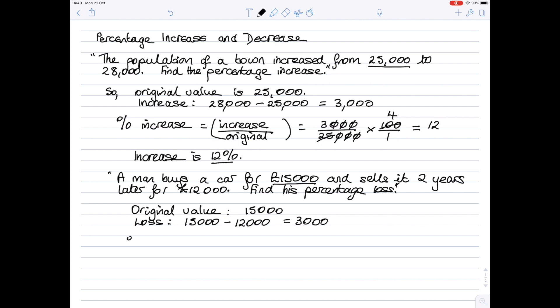So to find our percentage loss, you put the change—the loss which is 3,000—over the original which is 15,000 and convert it into a percent by multiplying by 100. Again, the 100 you can think of as 100 over 1. Plenty of zeros to cancel, and then the 3 will go into the 15 five times, and then we can also cancel the 5 with the 100.